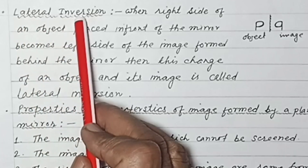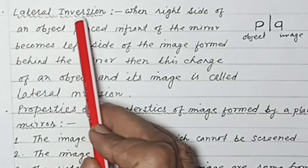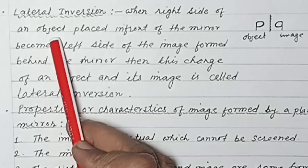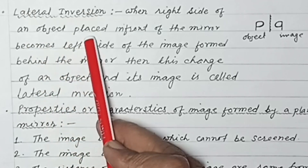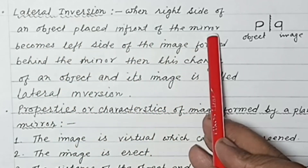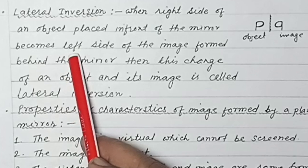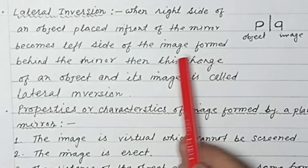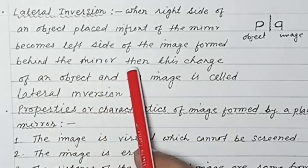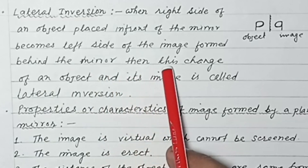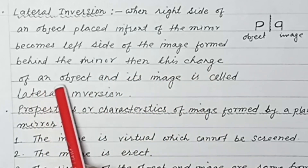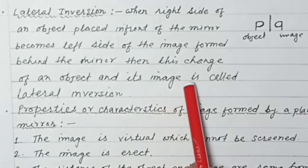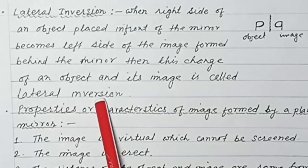Lateral inversion: when the right side of an object placed in front of the mirror becomes the left side of the image formed behind the mirror, this change between an object and its image is called lateral inversion.